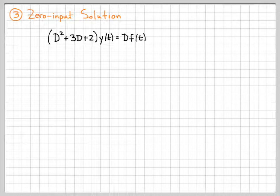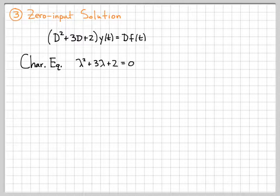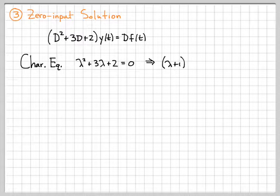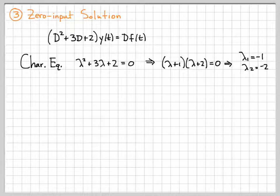From the previous video, this was the differential equation that we came up with. To find the zero input solution, I just need to find the characteristic equation, which I can get by replacing all the d's with lambdas and setting it equal to zero. This factors nicely into lambda plus one times lambda plus two, and by inspection we find the characteristic roots: lambda one equals minus one and lambda two equals minus two.